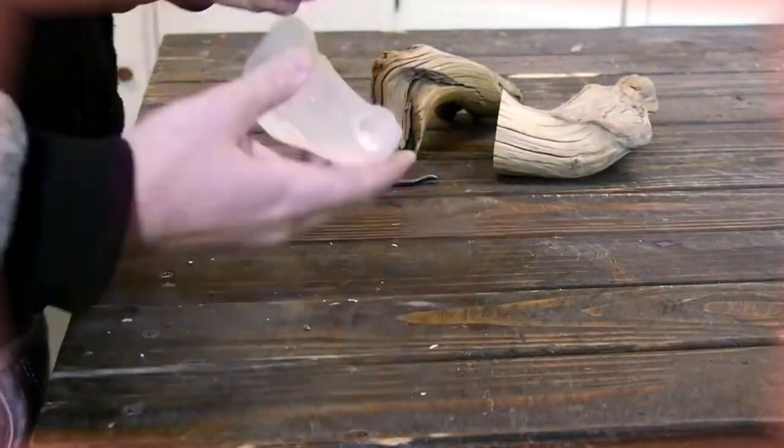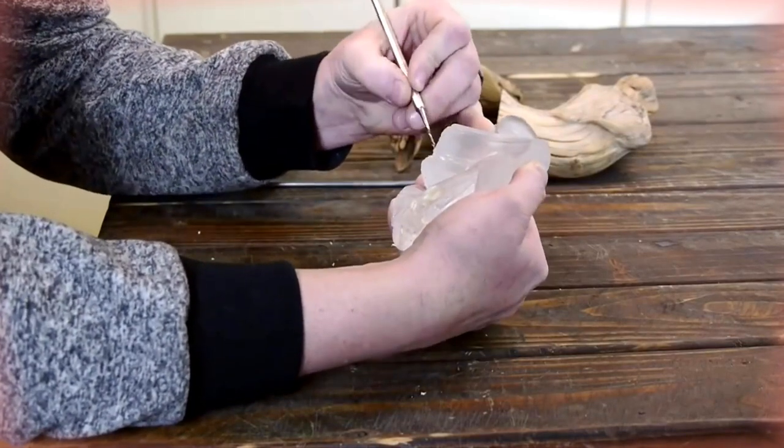Then this cast form, which turned out to be in the shape of a tree, will have to be carefully sanded and polished.